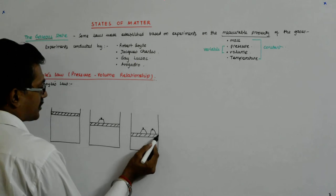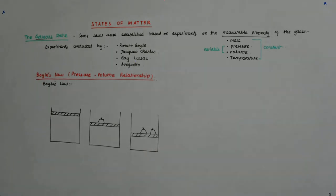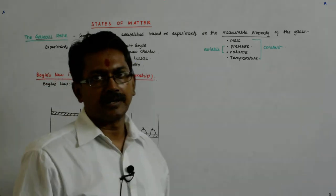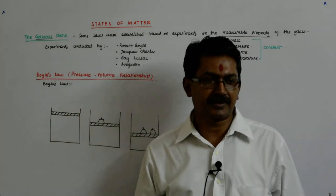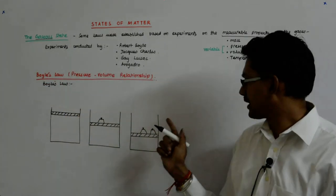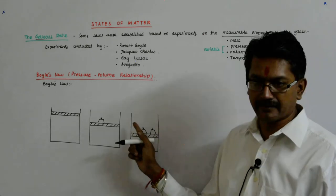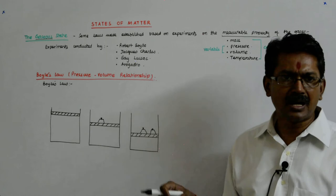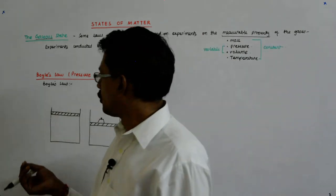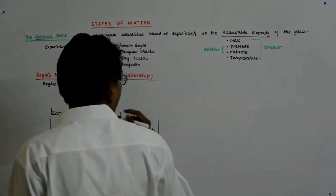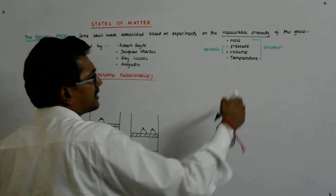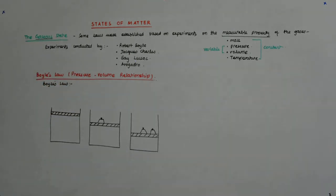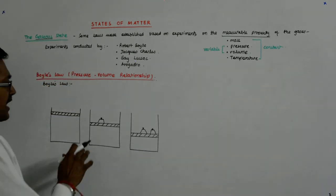This is a movable piston with hardly any friction, but the air inside has to be trapped — it should not be escaping from the sides. If it does, the mass becomes less. But I said that the mass and the temperature are constant, so now this is something we can comprehend.